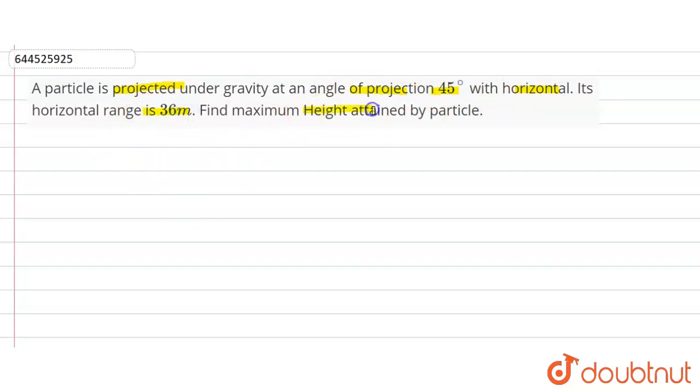So let's assume this is our ground, and one particle is projected from here with angle given as 45 degrees. And let's assume the velocity u.